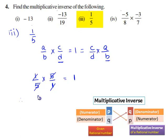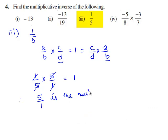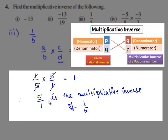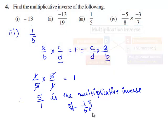Therefore, 5 by 1 is the multiplicative inverse of 1 by 5. Here we clearly observe that 5 by 1 is obtained by switching the numerator and denominator of the given rational number.